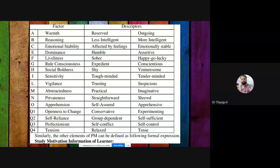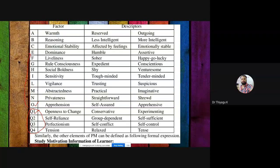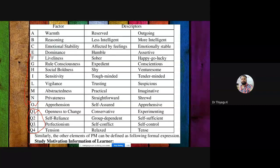The terms Cattell used for the 16 factors follow the labels A through O for the first 12, and then Q1, Q2, Q3, Q4 for the remaining four. The same order applies: warmth (reserved to outgoing), reasoning (less to more intelligent), emotional stability, dominance, and so on. Different psychologists who adopt this theory sometimes use different terminology when describing the descriptors, because each psychologist adapts the language to suit their context.